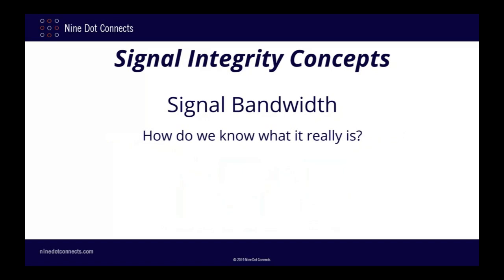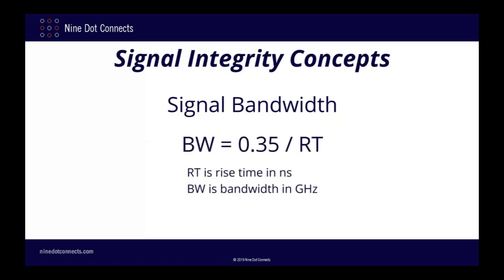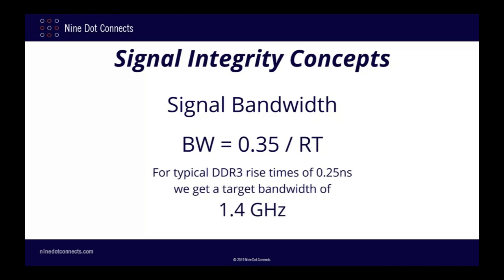Signal bandwidth is all well and good, but how do we know what it actually is? How do we determine the frequency range we're concerned about when the only information we have are things like the transition times of the signal? Fortunately, we can use a simple rule of thumb provided by Bogatin. If we know the rise time in nanoseconds, we can calculate the approximate bandwidth with a simple formula. Since our example is based on DDR3 and typical rise times for DDR3 signals are in the 0.25 nanosecond range, we calculate our target bandwidth to be about 1.4 GHz.